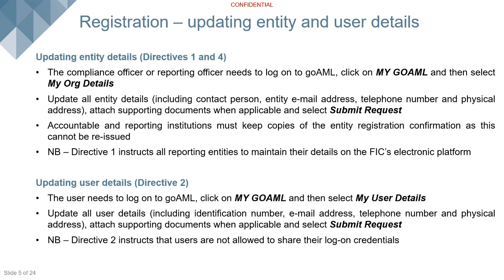The first requirement is that once registered with the FIC, you must ensure your organization's details are kept up to date. In terms of Directive 1, all reporting entities must maintain their details on the FIC's electronic platform. If any details change — such as contact person, phone numbers, or physical address — you must update those details with us. If a branch or business closes, you also have to notify us so we can deactivate that account.